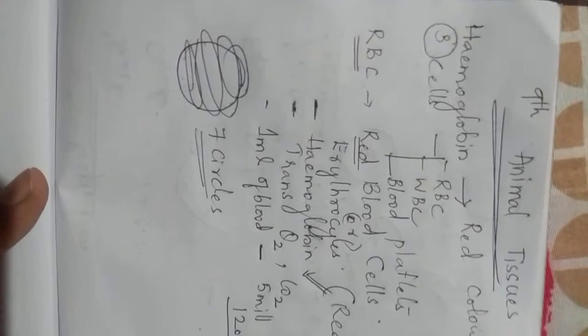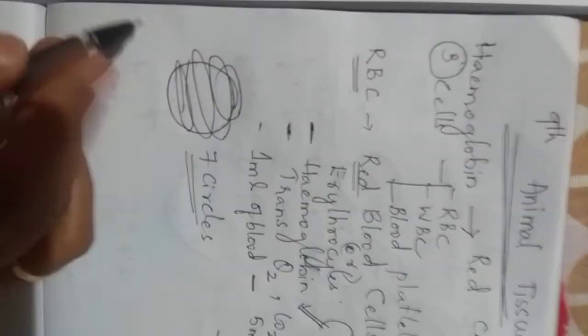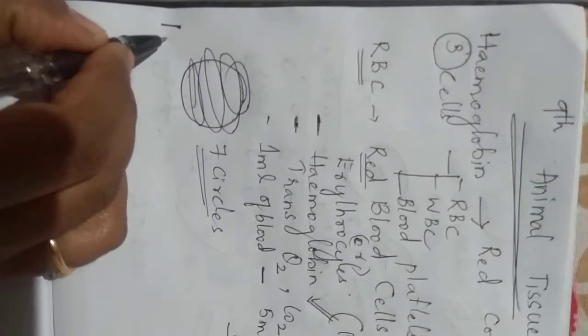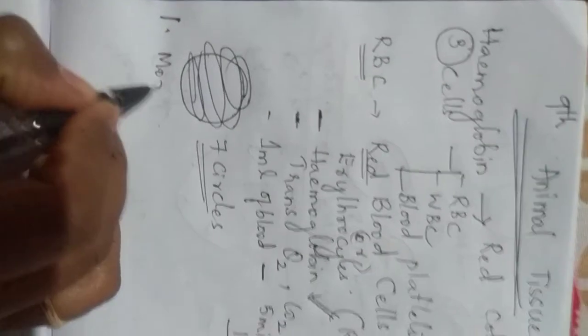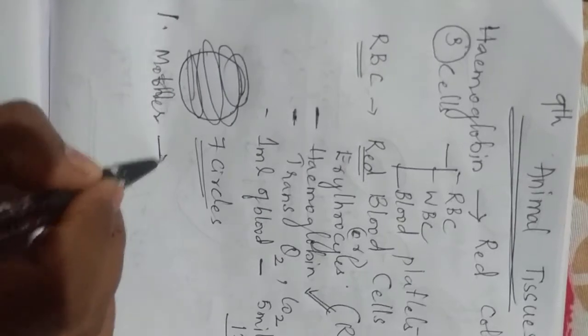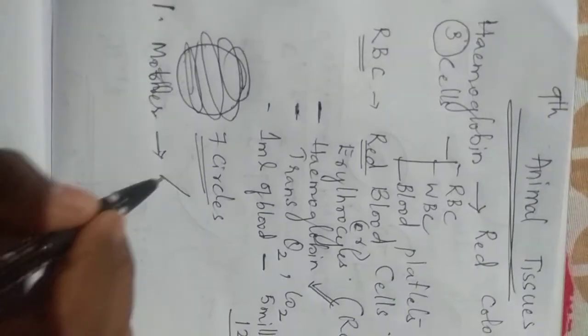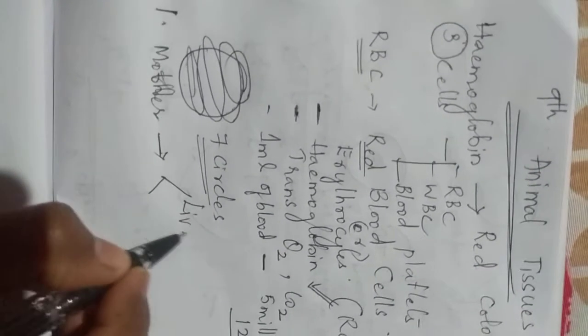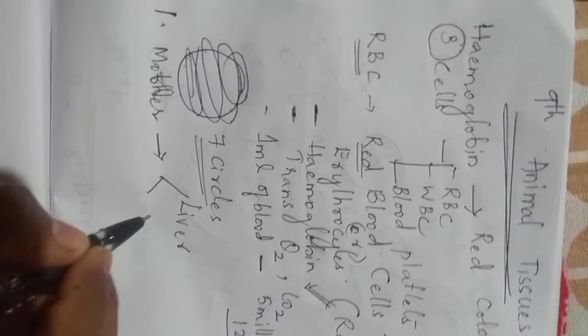And RBC cells where they are formed. So they are formed firstly in our mother's womb. If you are there in your mother's stomach, at that time RBC will be produced in two organs. That is liver and spleen.